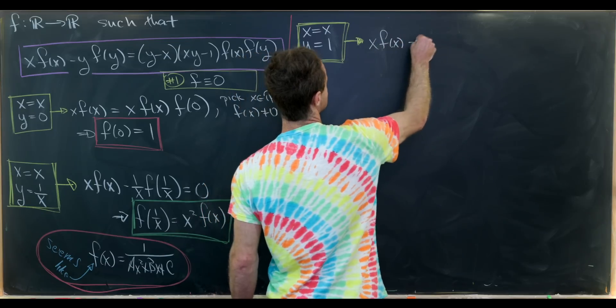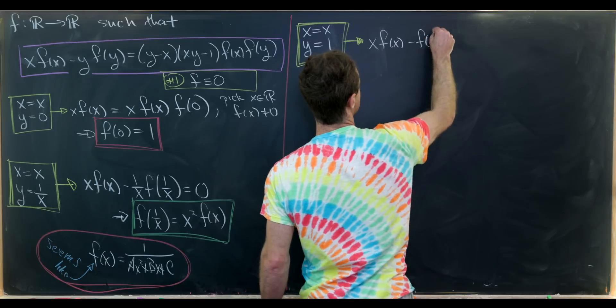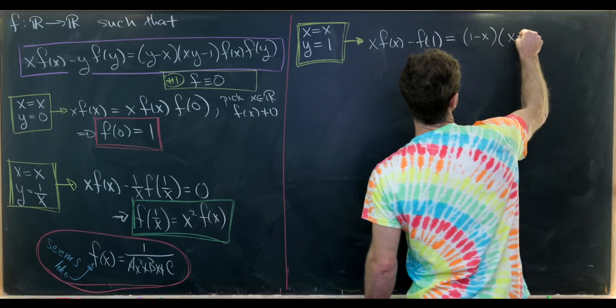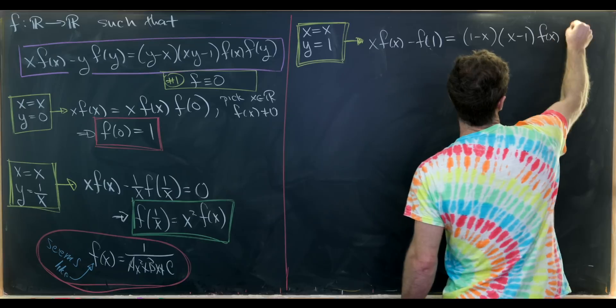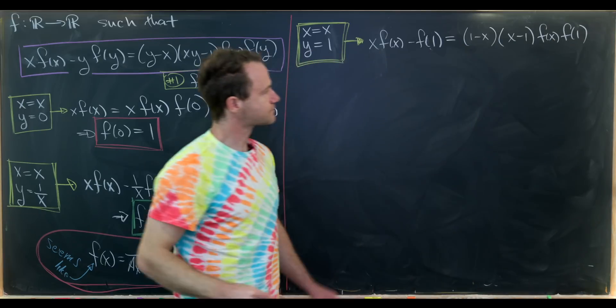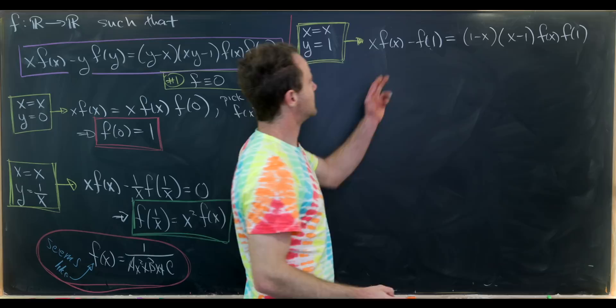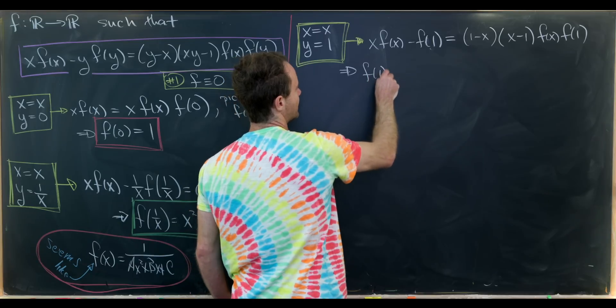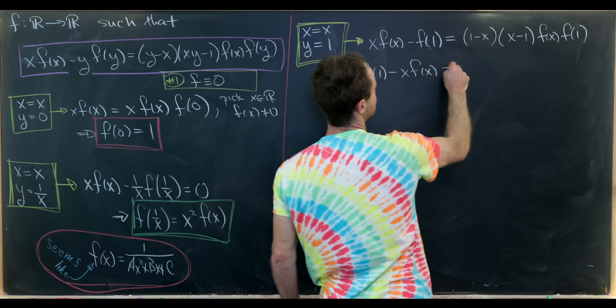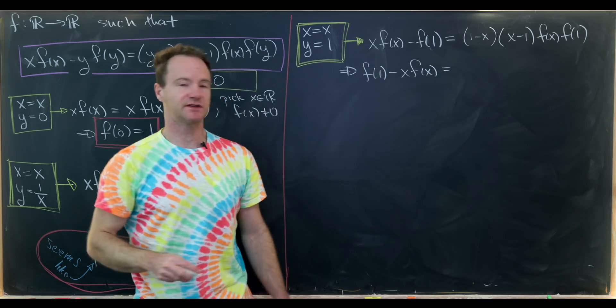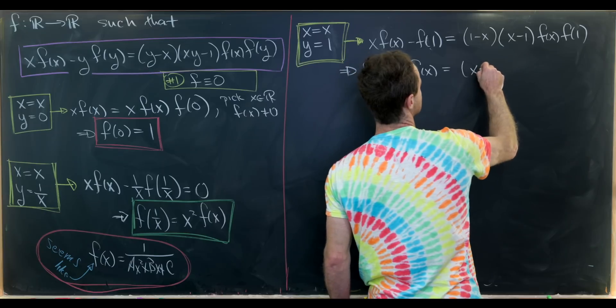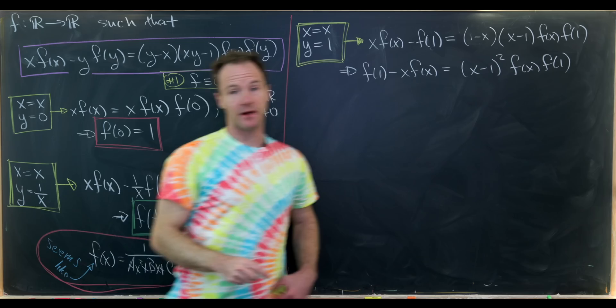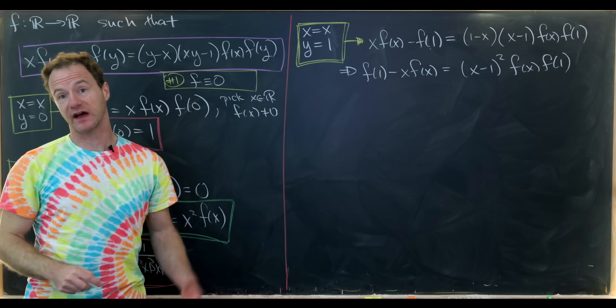That'll leave us something like this: xf(x)-f(1) equals (1-x)(x-1)f(x)f(1). And in fact we can move some stuff around here. Let's multiply both sides by -1, that'll leave us with f(1)-xf(x) equals (x-1)²f(x)f(1). And perhaps now we could solve this for f(x).